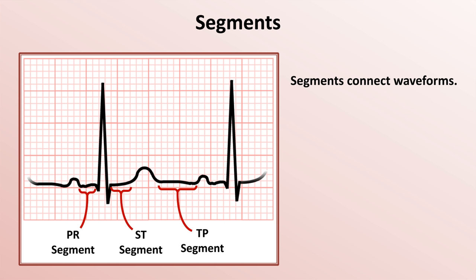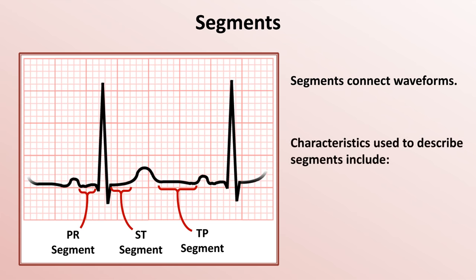The TP segment is sometimes referred to as the isoelectric point of the recording. The only characteristic typically used to describe segments is morphology, including whether or not they have positive or negative deflection as compared to the TP segment. For example, negative deflection or depression of the PR segment can be seen in pericarditis, while either positive or negative deflections of the ST segment can be seen in a variety of conditions such as ischemia, myocardial infarction, conduction blocks, and ventricular hypertrophy.